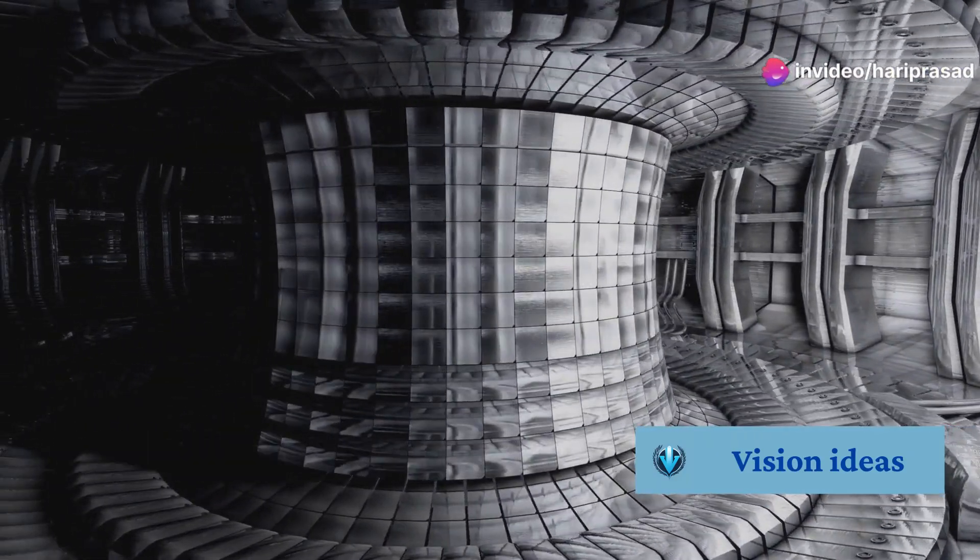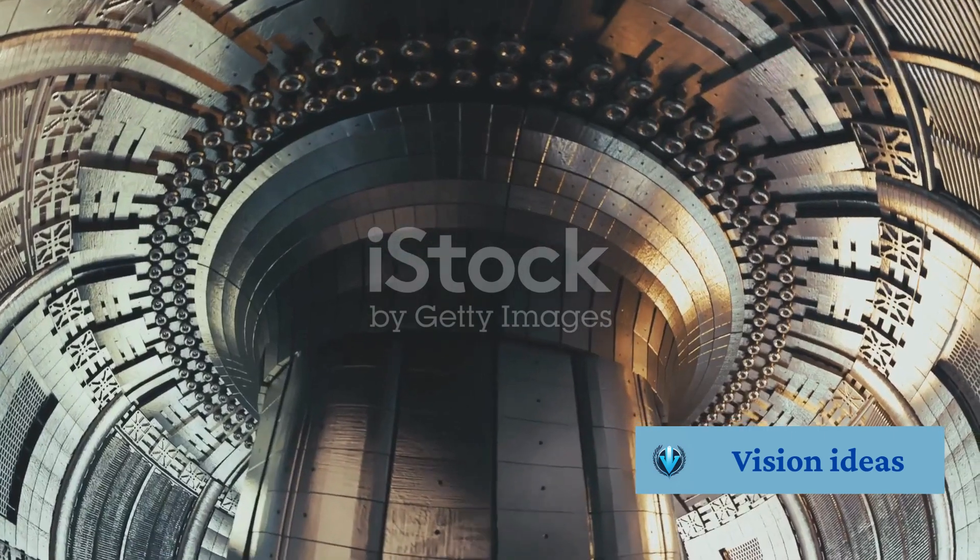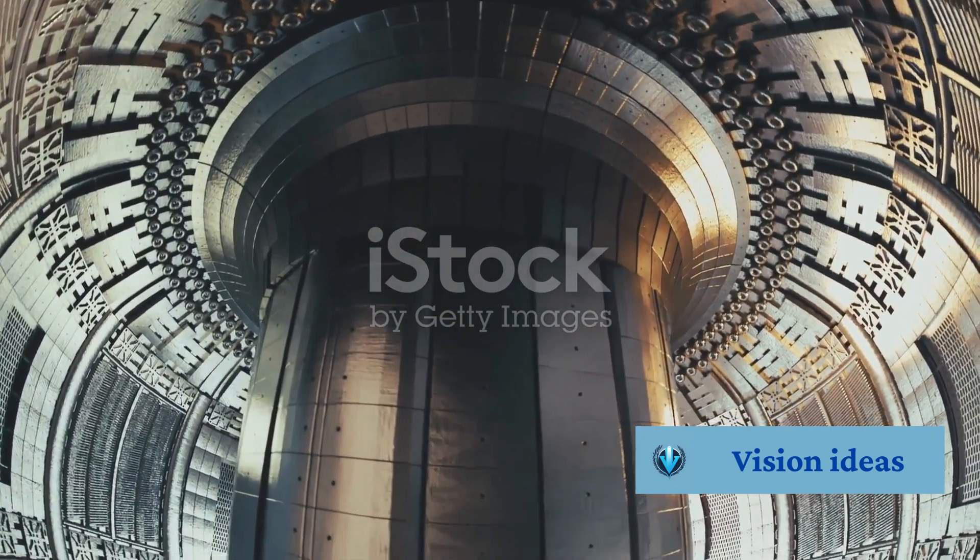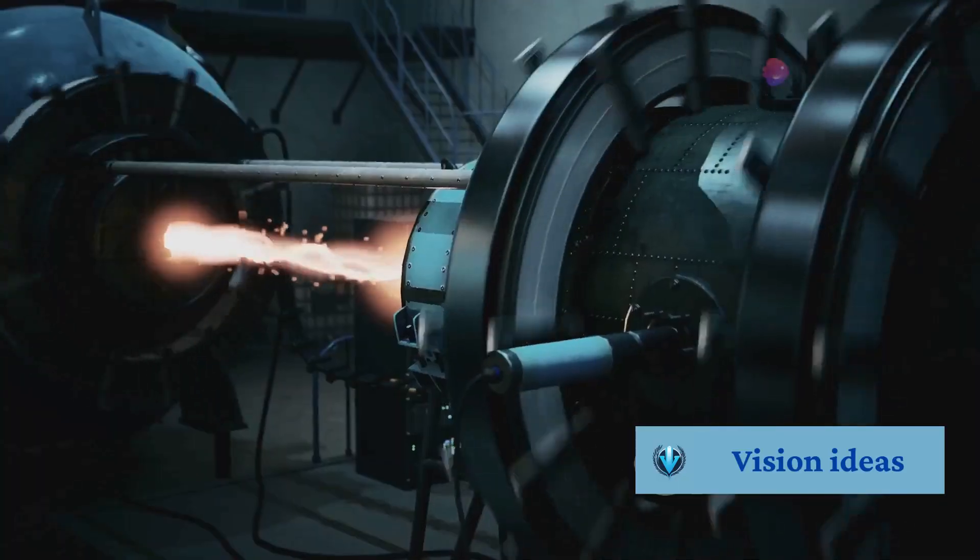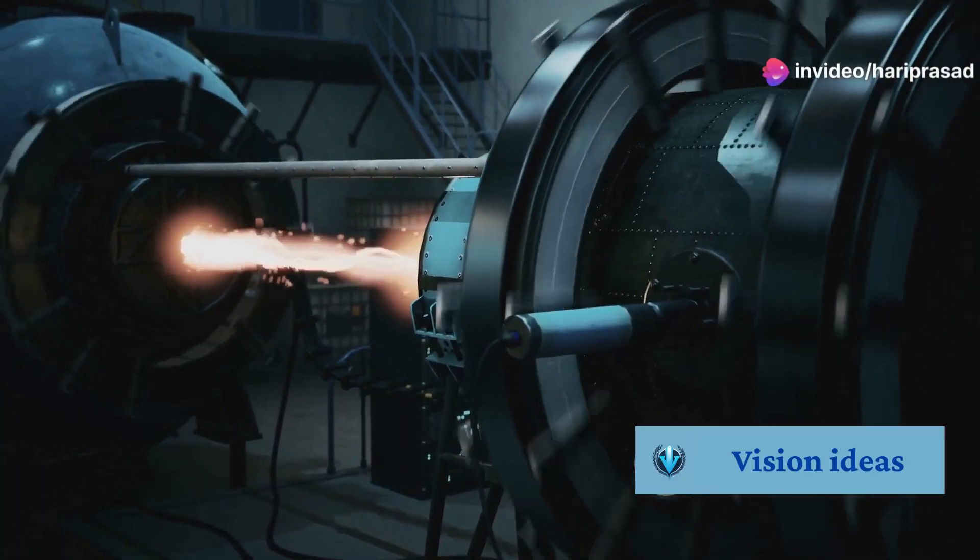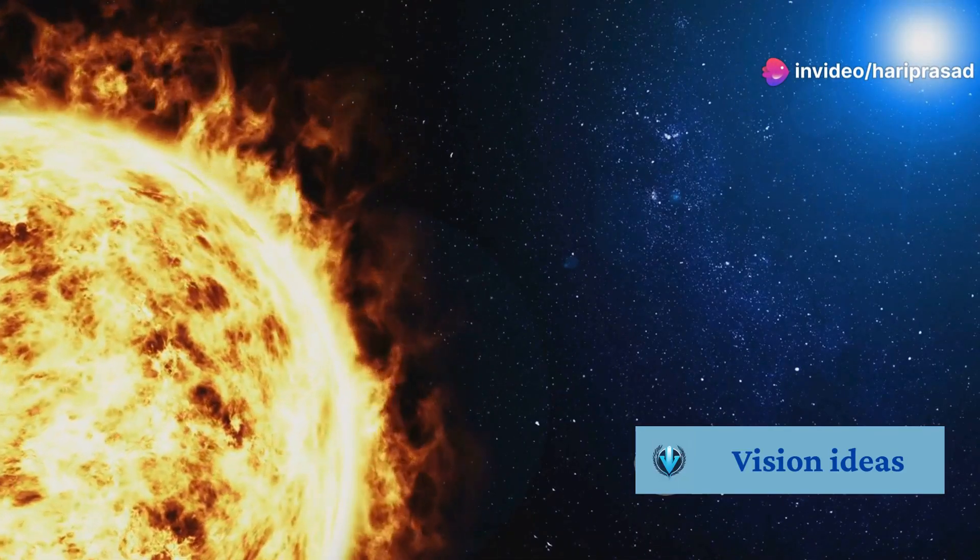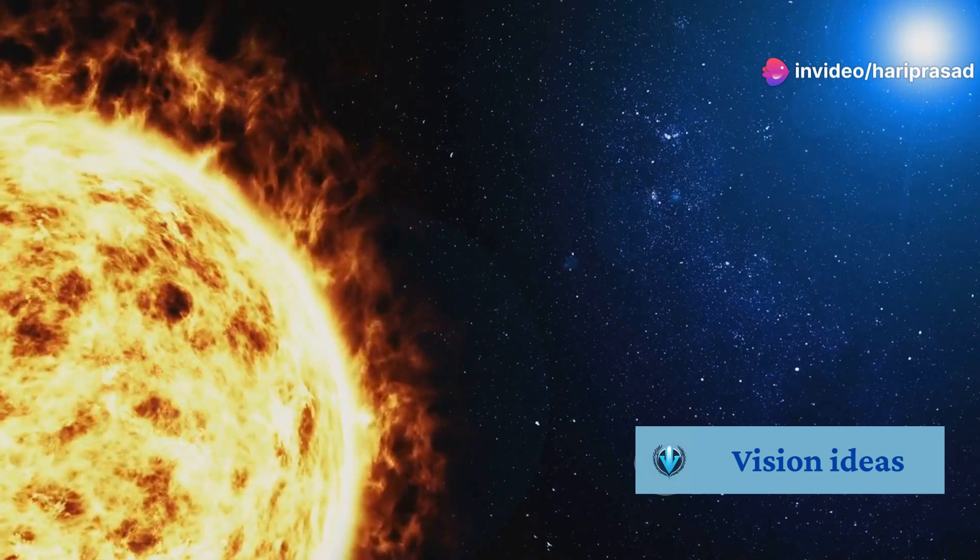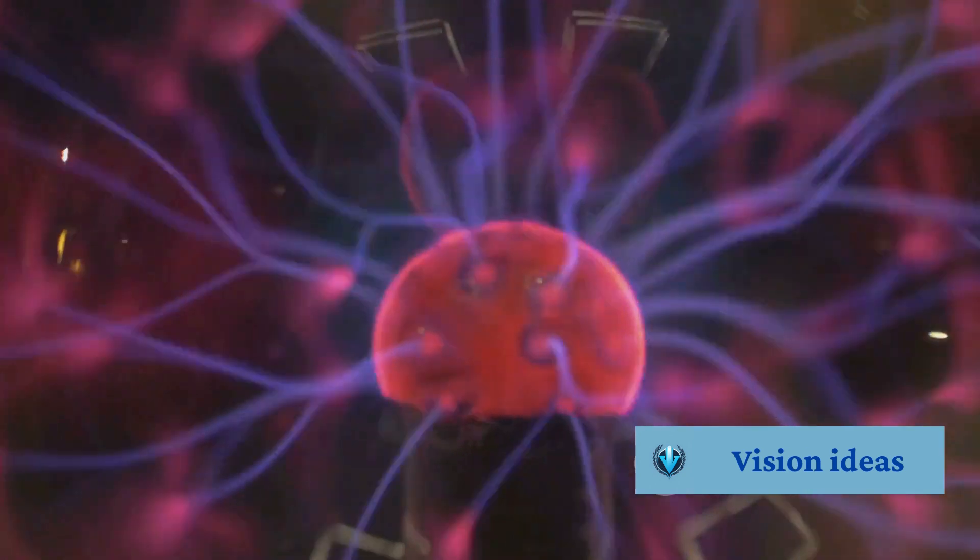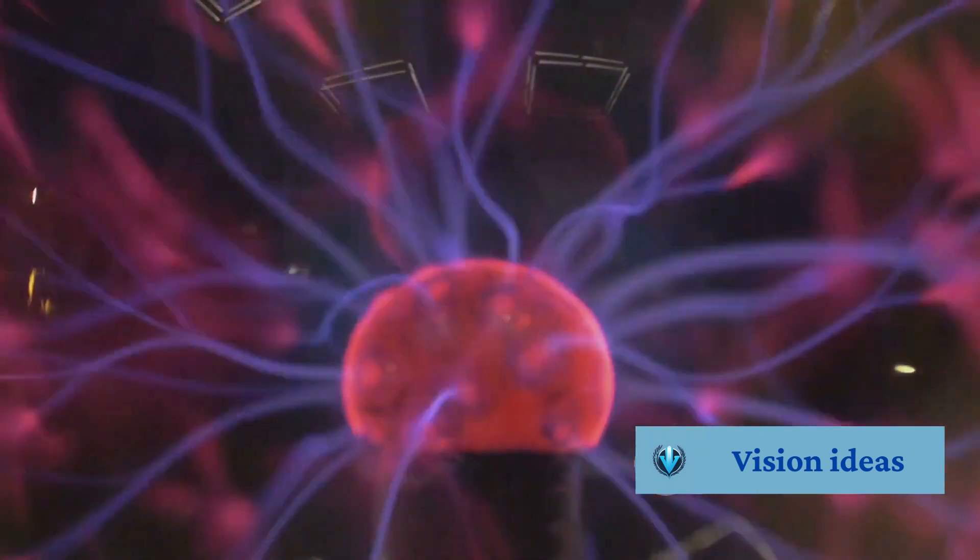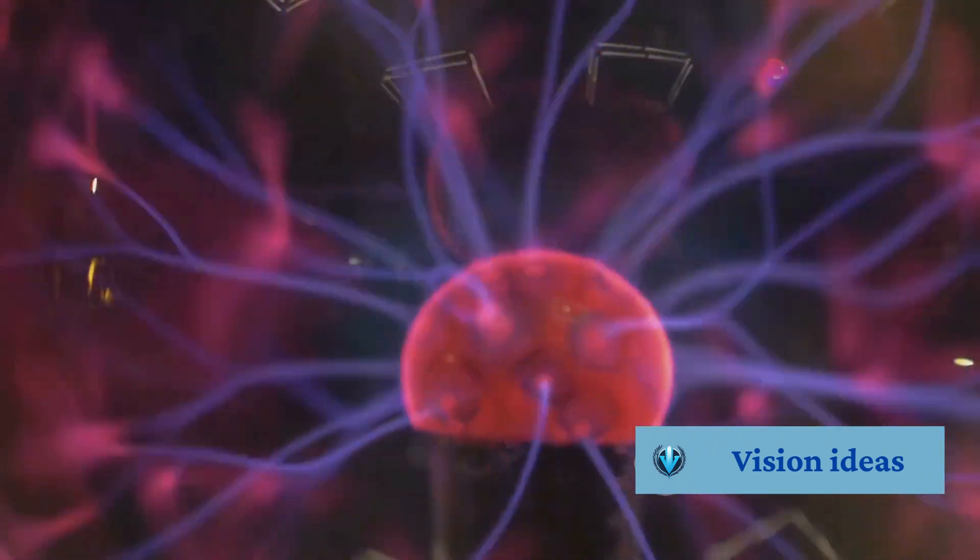Building an artificial sun, or a fusion reactor, is a complex endeavor requiring cutting-edge technology and innovative engineering. Here's a simplified look at the process. First, the deuterium and tritium fuel is heated to millions of degrees Celsius, hotter than the sun's core. This extreme heat strips the electrons from the atoms, creating the plasma needed for fusion.